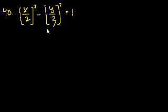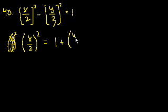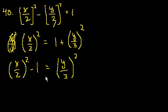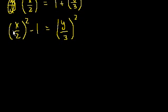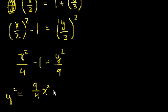Let's rearrange this. Keep it as (x/2)² = 1 + (y/3)², then subtract 1 from both sides: (x/2)² − 1 = (y/3)². Rewriting: x²/4 − 1 = y²/9. Multiply both sides by 9: y² = (9/4)x² − 9. That's about as far as we can get with straight algebra.